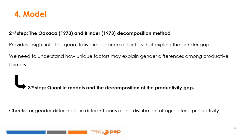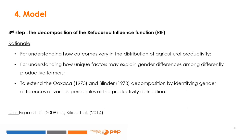As you can see, the Oaxaca-Blinder decomposition provides insight into the quantitative importance of factors explaining the gender gap. But if we need to understand how unique factors may explain gender differences among differently productive farmers, we refer to quantile models and the RIF decomposition of the productivity gap. The aim is to check for gender differences in different parts of the distribution of agricultural productivity. The RIF decomposition allows us to understand how outcomes vary in the distribution of agricultural productivity, how unique factors may explain gender differences among differently productive farmers, and how to extend the Oaxaca-Blinder decomposition by identifying gender differences at various percentiles of the productivity distribution. Applications include Firpo et al. 2009 and Kilic et al. 2014.